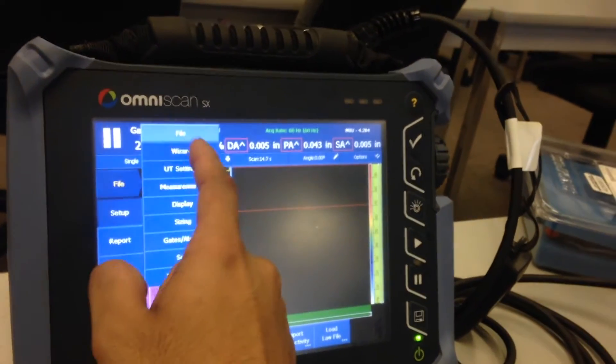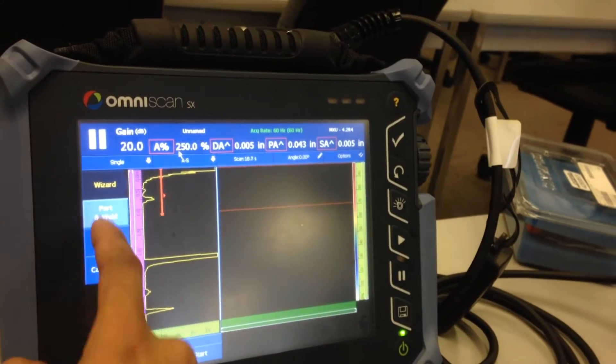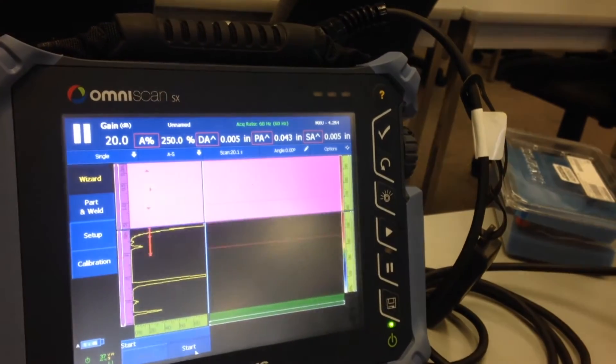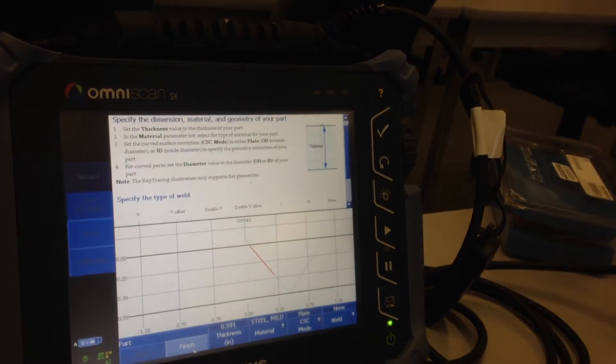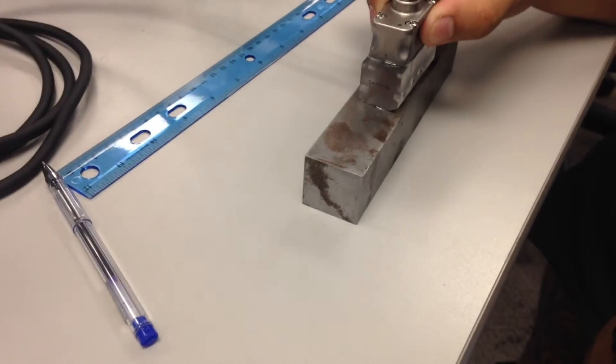Here I'm going to set up the part thickness and the type of material that I'm inspecting. So my thickness in this case is one and a quarter inch thick calibration block, and the material is mild steel. Finish.